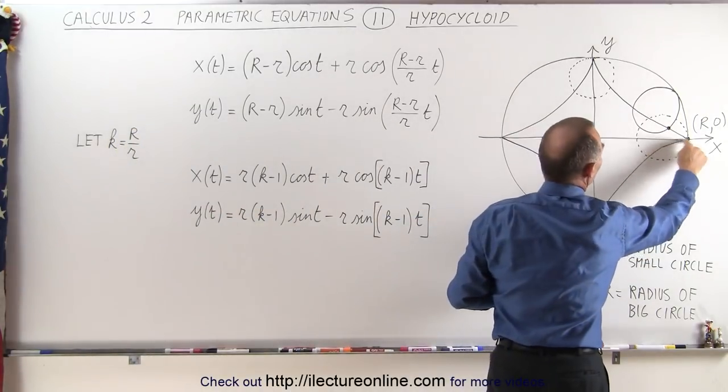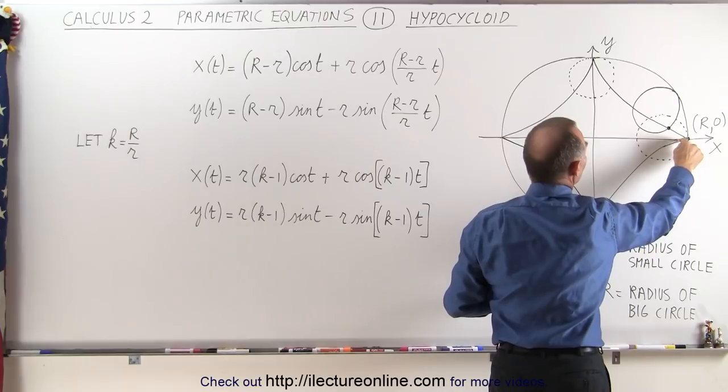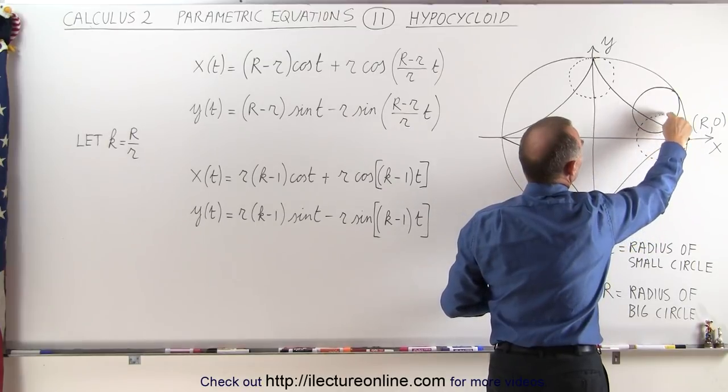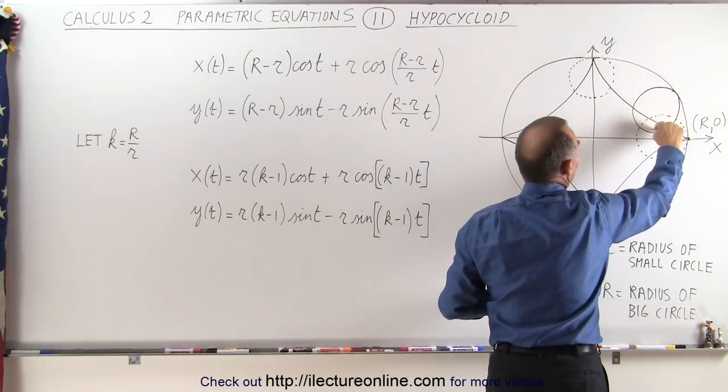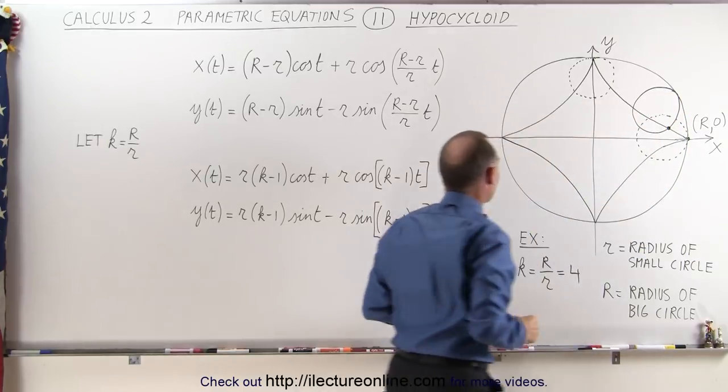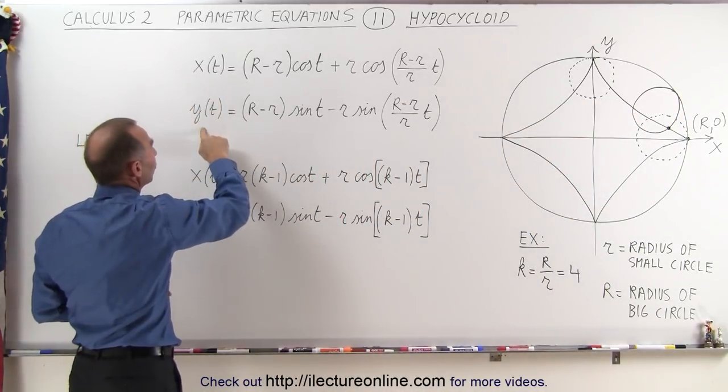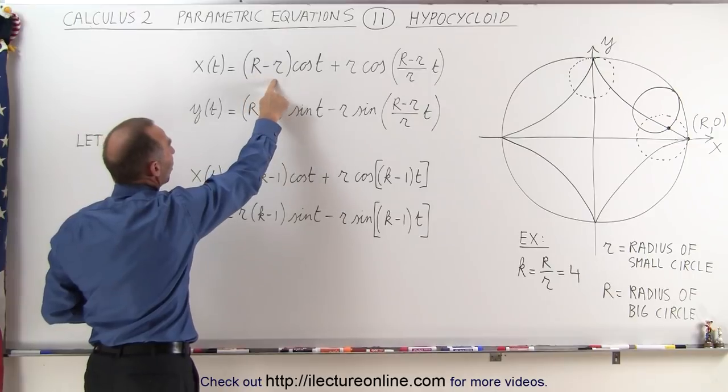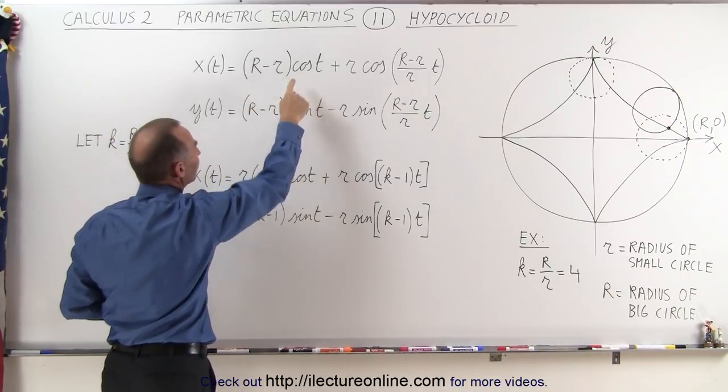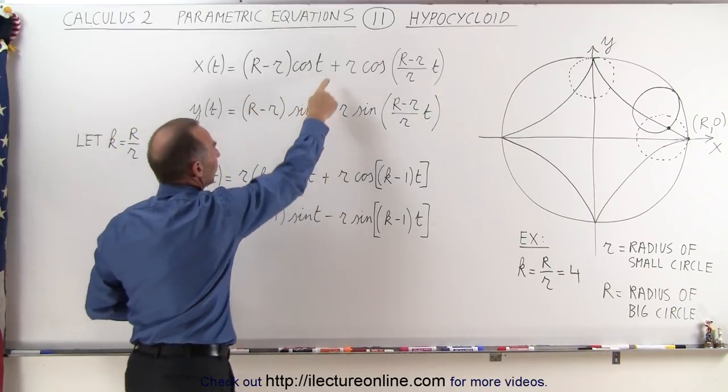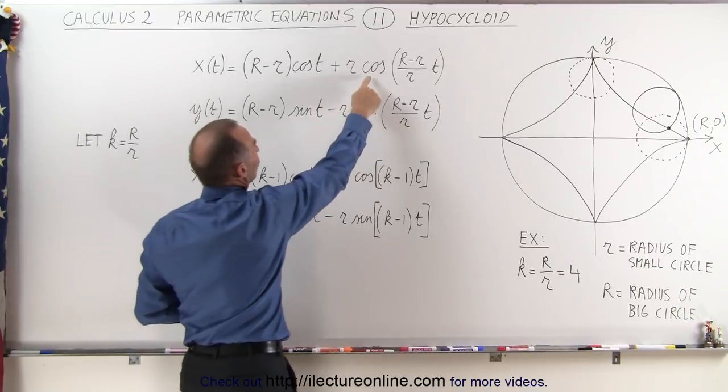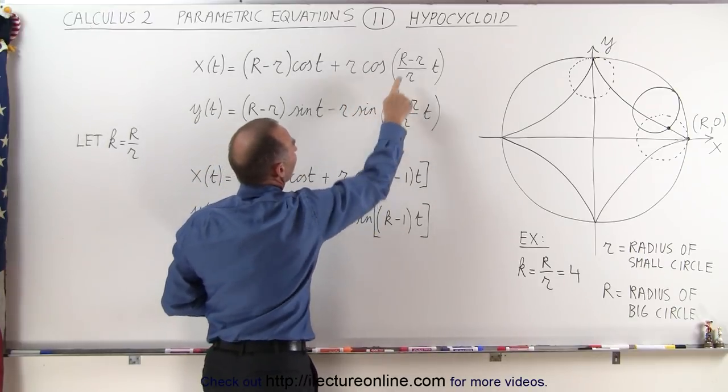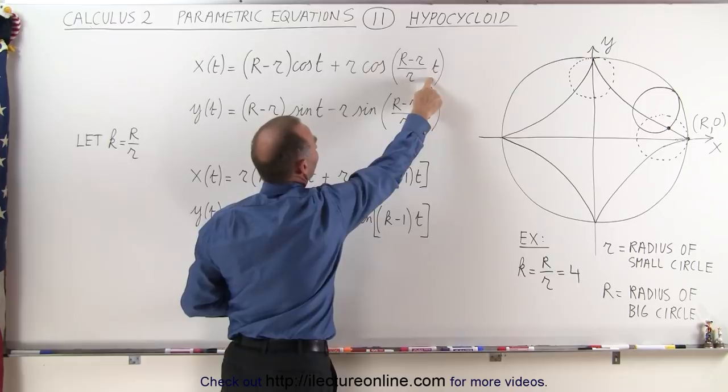So the angle starts at 0 and as it rotates the angle then increases. And you can see that we go from 0 to here and then it just goes all the way around the circle like that. And so the x-position, the y-position are defined as big R minus small r times the cosine of t for x, sine of t for y, plus or minus r cosine or r sine of (R-r)/r times t.